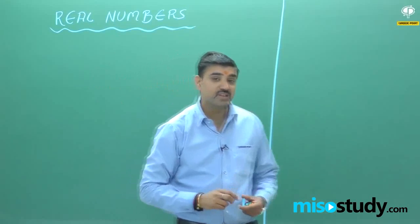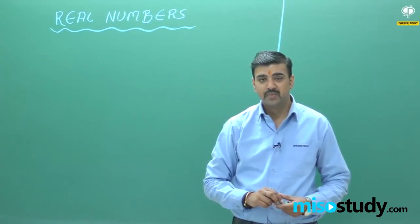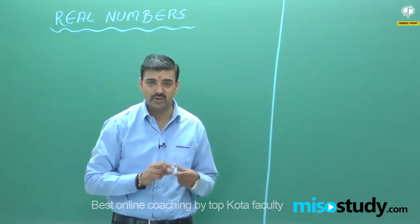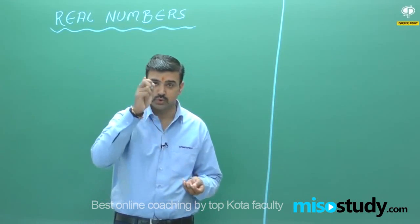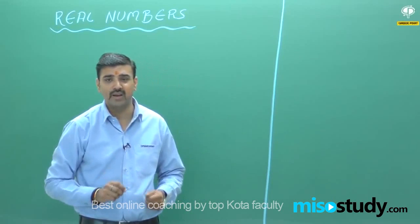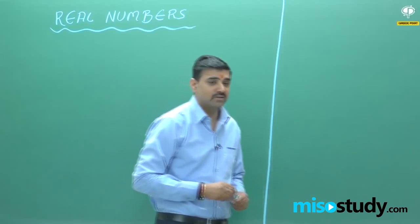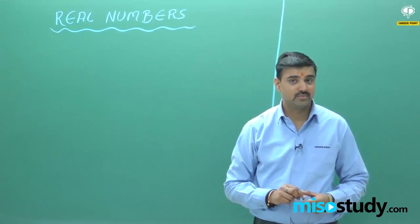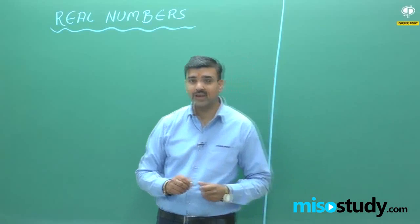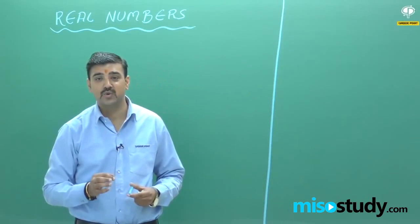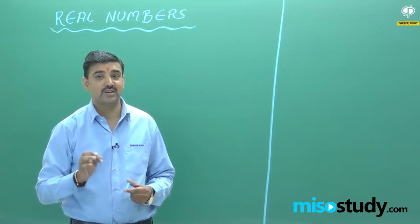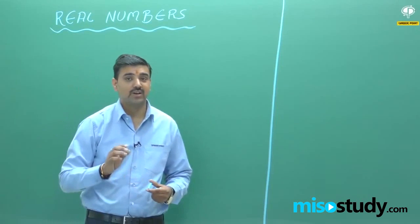So, basically, from where do numbers come? If I told you to count these chalk pieces in my hand, you start 1, 2, 3, 4 — it means these numbers come automatically in your mind. We can say these are the numbers that we get from nature. So these numbers are known as natural numbers.